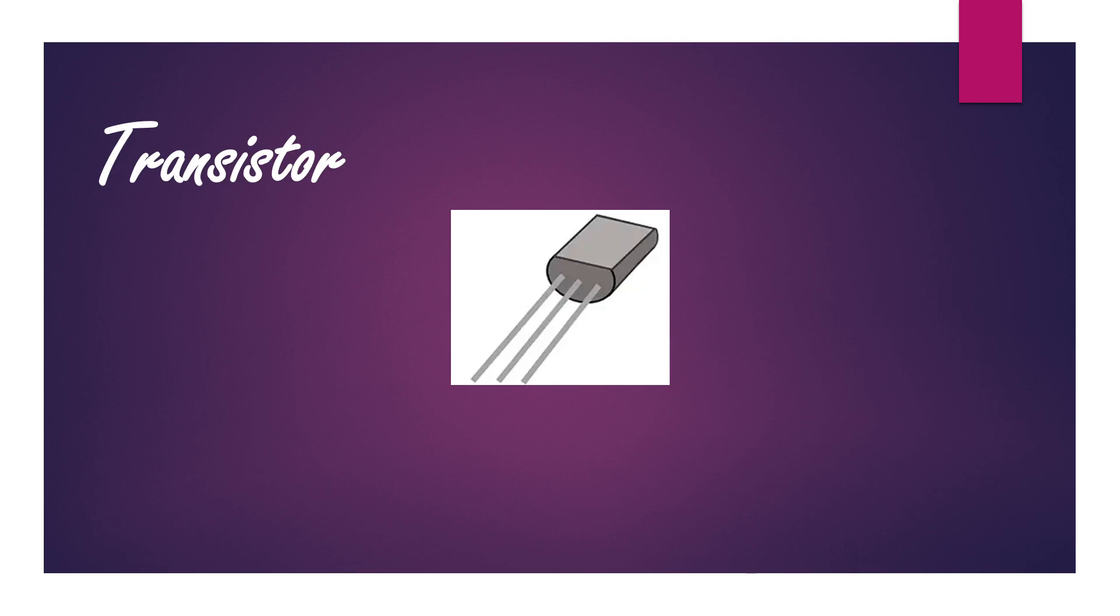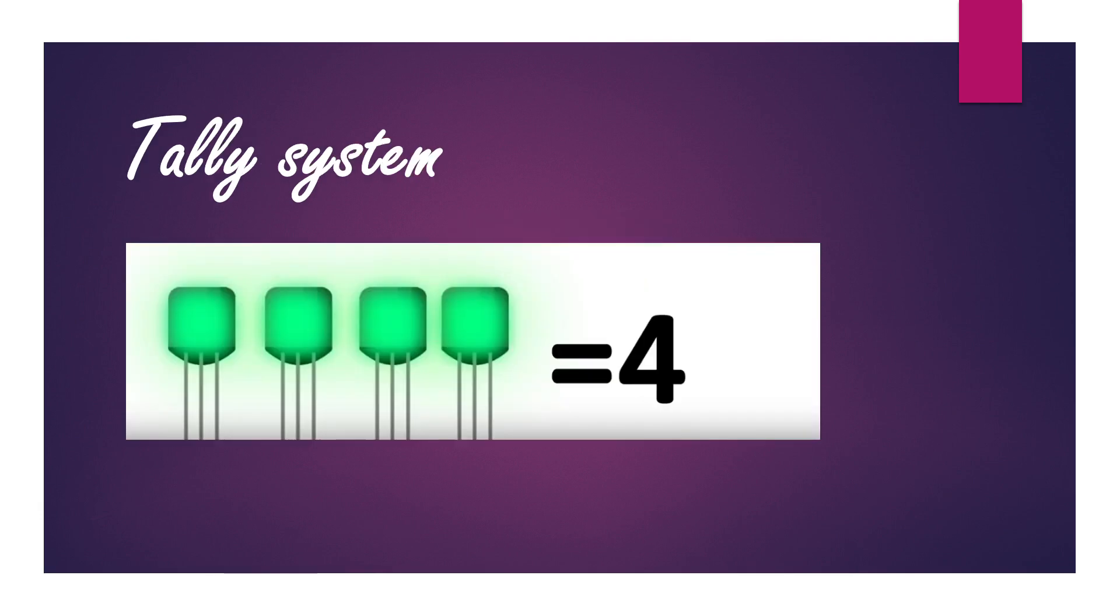So what about computers? Everything in computers actually comes down with the help of these transistors. Transistors are small switches which can get on and off position. So if you want to write some number with the help of these transistors, just like in tally system, if you have 4 transistors on, of course you will get 4 numbers.